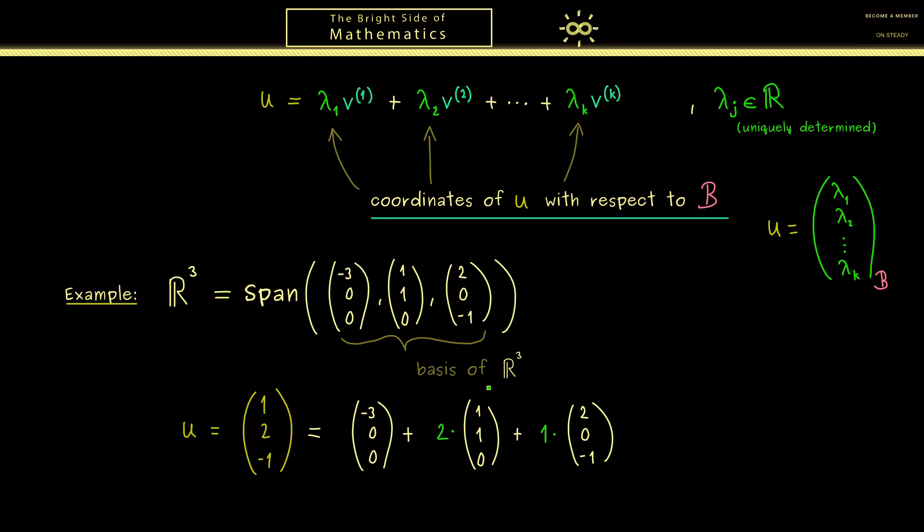And then we just have to combine these two vectors here to see that we need the first vector once. So in other words you see this system of linear equations was easily solvable. Hence we get the coordinates of u with respect to this new basis are 1, 2, 1. So in this case almost the same as the coordinates with respect to the standard basis.